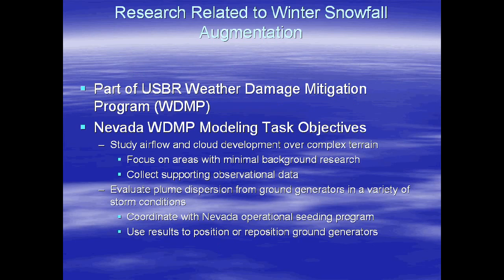This is research related to wintertime snowfall augmentation, part of the USBR weather modification program — I said mitigation, but the actual name is modification, though mitigation seems more appropriate. For the Nevada program, one of the tasks was to study air flow and cloud development over complex terrain, focusing on areas of our project where there's been little background research and collecting supporting observational data to verify the modeling steps.